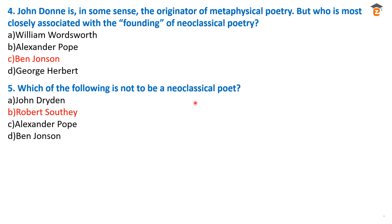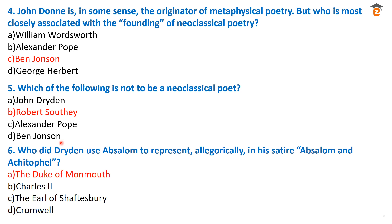Question number five: which of the following is not a neoclassical poet? The correct answer is option B — Robert Southey. Robert Southey was not a poet of the neoclassical age; he was from the Romantic Age. All other three — John Dryden, Alexander Pope, and Ben Jonson — are neoclassical poets.